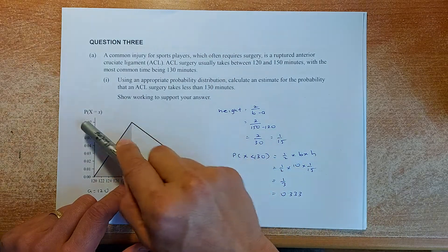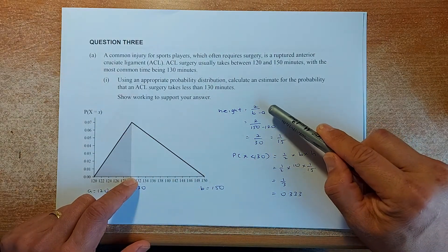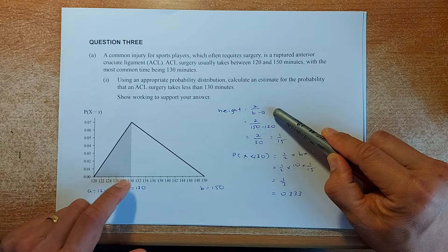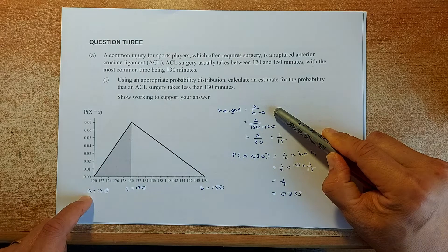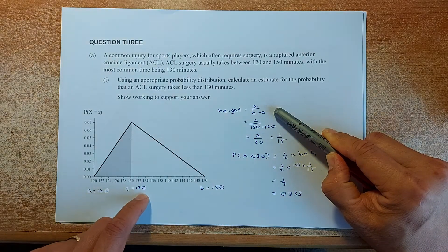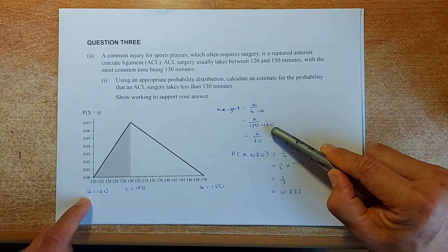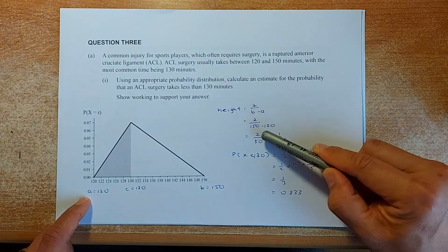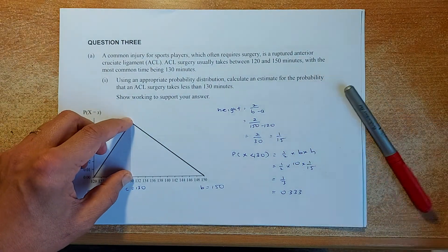The formula to calculate the height of a triangular distribution is 2 divided by B minus A. We have labeled A as 120, B as 150, and C as 130. So 2 divided by (150 minus 120) equals 2 divided by 30, that's 1 over 15. So the height here is 1 over 15.